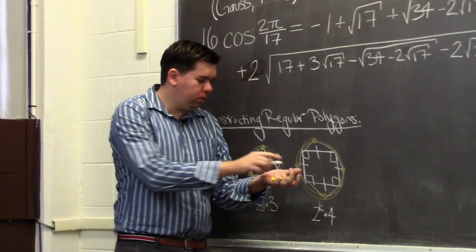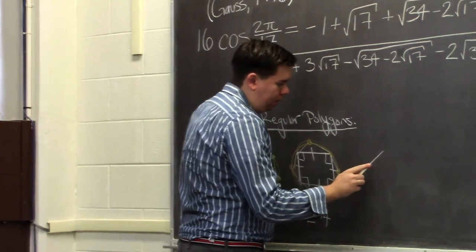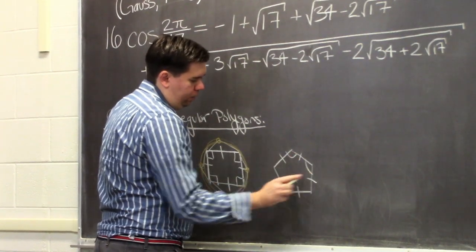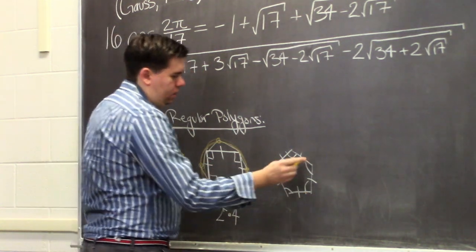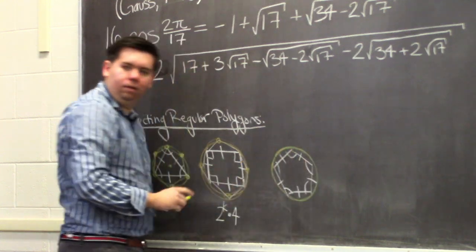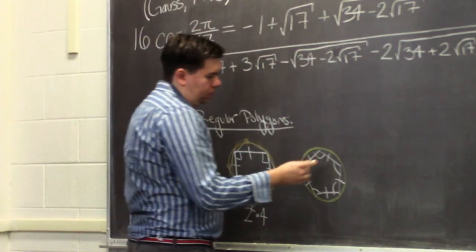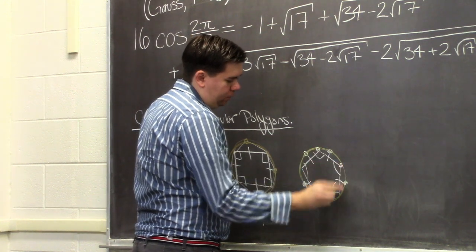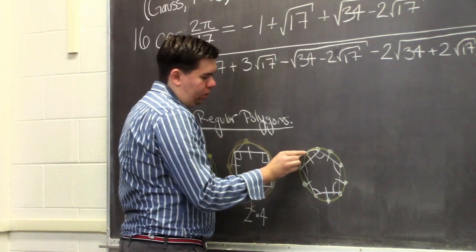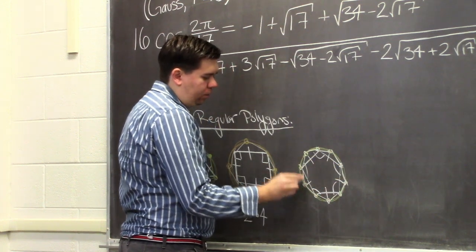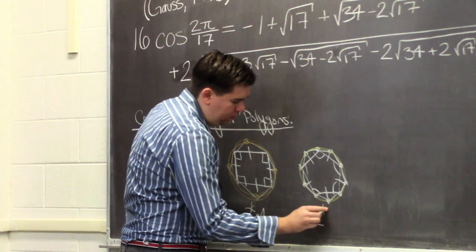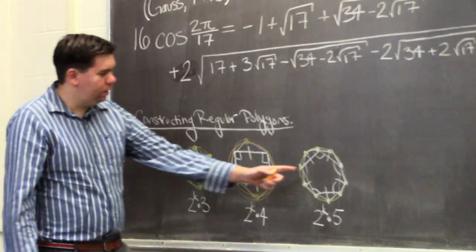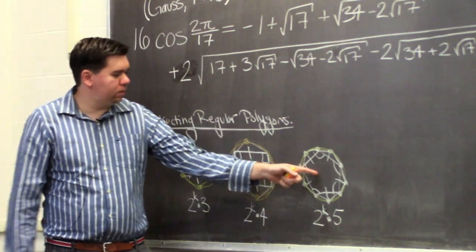In Book 4, Euclid gives us a way of constructing the regular pentagon — a regular five-sided shape where all sides are congruent and all angles are equal. Once you can construct that, you can bisect each side, find the corresponding points on the circle, giving you 10 equally spaced points — the regular 10-gon. Likewise, you can bisect those to get the regular 20-gon and so forth, getting anything of the form 2^k × 5. In some ways, the regular pentagon is the crowning achievement of the first four books of Euclid's Elements.